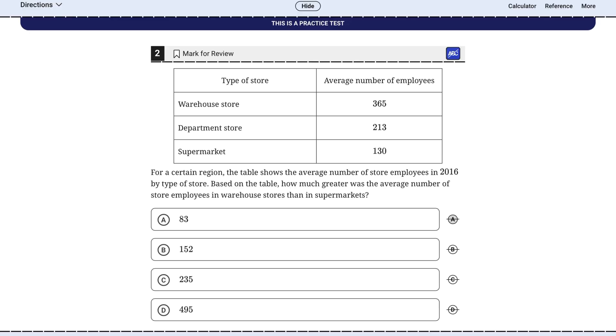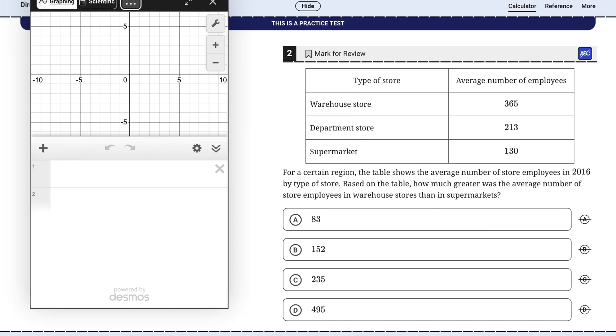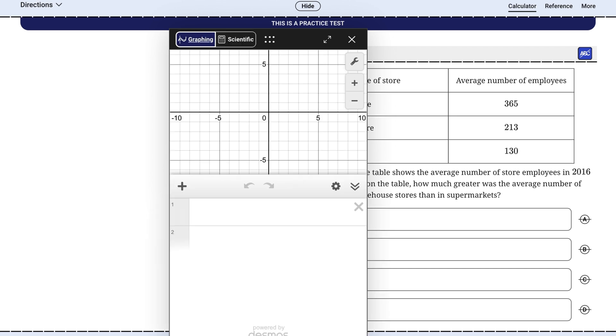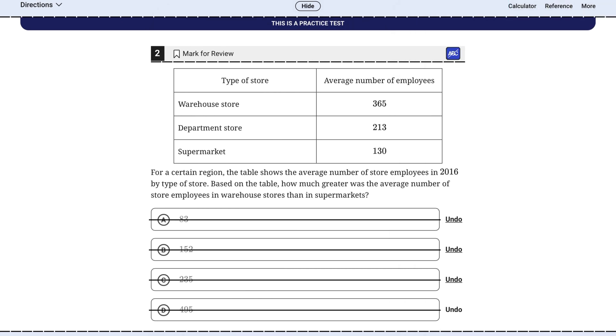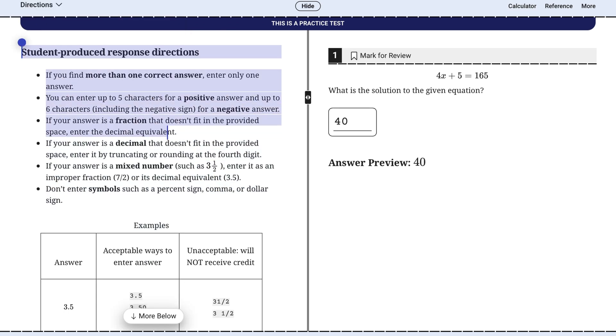Second, use the built-in tools strategically. We've talked about Mark for Review and Desmos. Don't forget you can also eliminate answer choices by clicking on them. This is incredibly helpful for narrowing down your options on tough questions, and use the annotator tool to highlight key phrases or numbers in word problems to keep yourself focused.